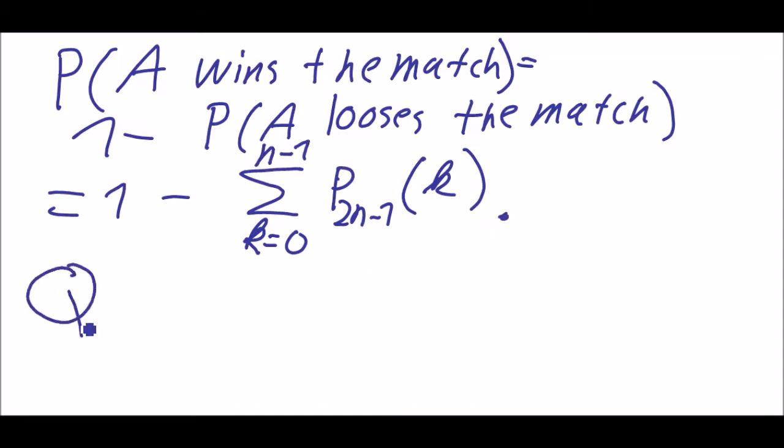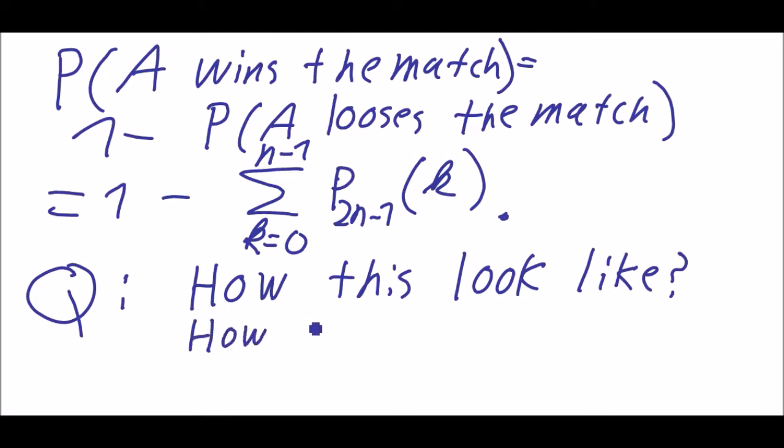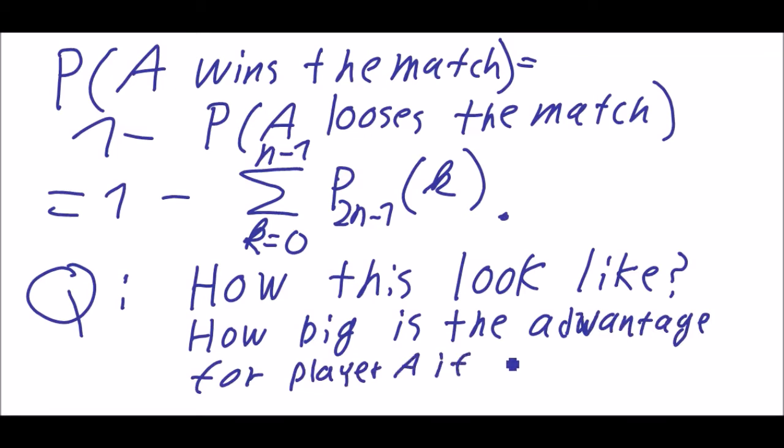So the question is, how does this look like, and how big is the advantage for player A if p is bigger than 0.5?